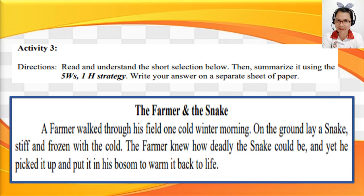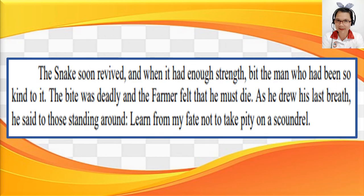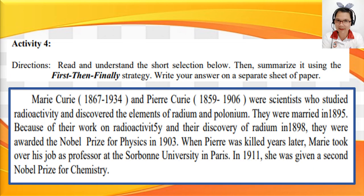For Activity 3, use the 5Ws and 1H strategy to summarize The Farmer and the Snake. A farmer walked through his field one cold winter morning and found a snake stiff and frozen. He picked it up to warm it, but the snake revived and bit the farmer fatally. As he drew his last breath, he said, 'Learn from my fate, not to take pity on a scoundrel.' For Activity 4, read the short paragraph and make a summary using First, Then, Finally.